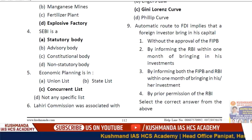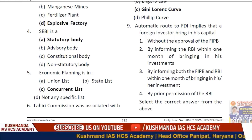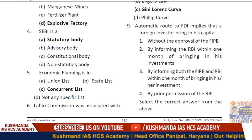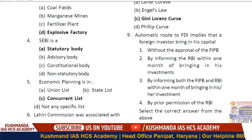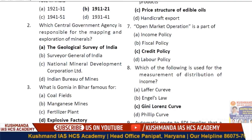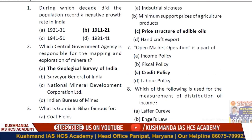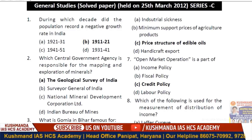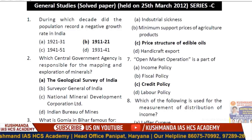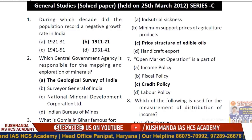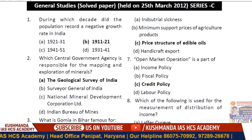Question 6 is on the Lahiri Commission. The Lahiri Commission was associated with option C — the price structure of edible oils.